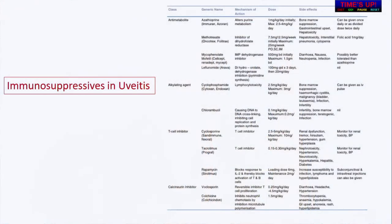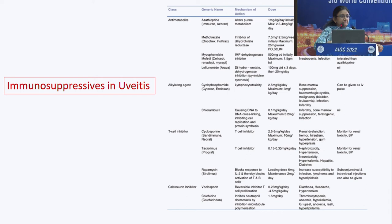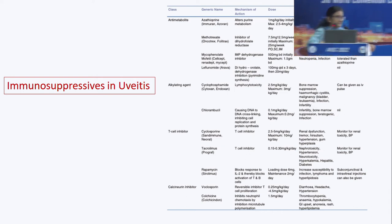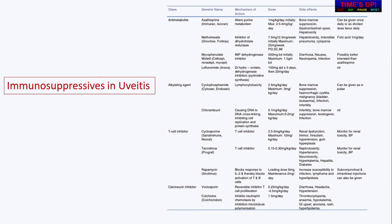We start methotrexate in a dose of 7.5 to 12.5 mg per week initially; the maximum dose can go up to 25 mg per week. We give it along with folic acid. Methotrexate can be given orally or as a subcutaneous injection, once a week. Please make sure the patient does not take folic acid on the day he receives methotrexate — the two have to be on different days. Generally we go up to 15 mg as the standard dose.